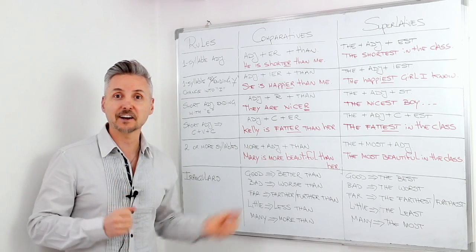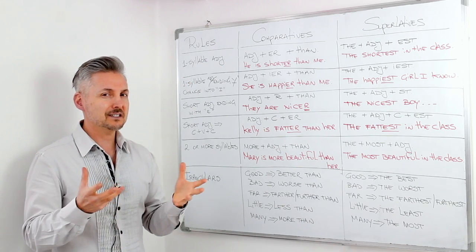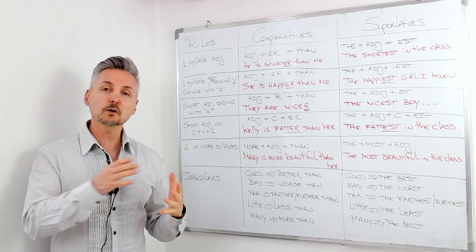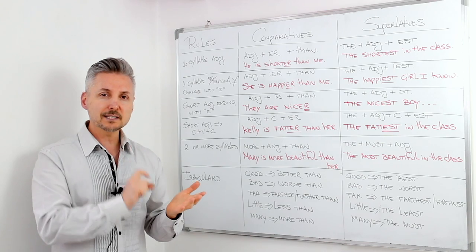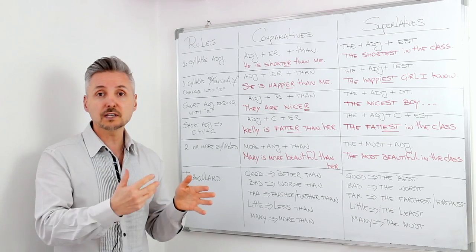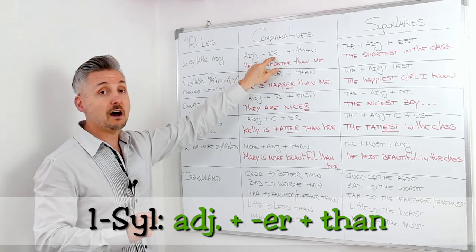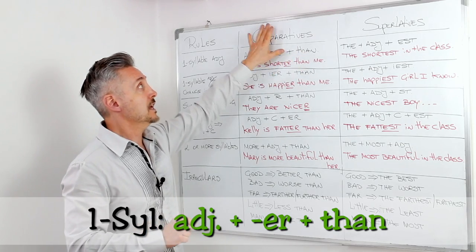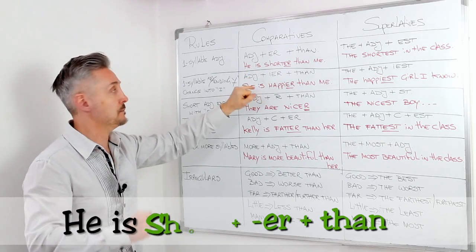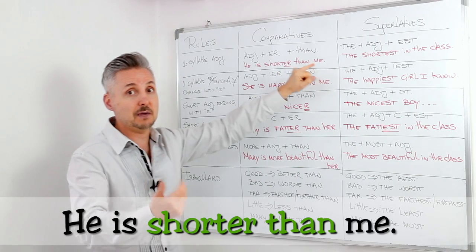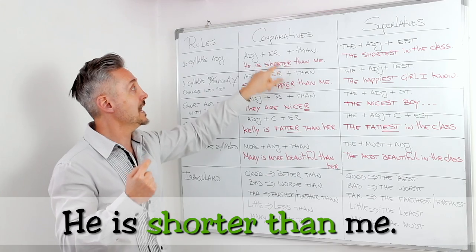We're back with the diagram. So, let's look at the first rule. One-syllable adjectives. And you ask yourself, one syllable? Yes, you can check the syllables in English on your dictionary. There, you can see if it has one syllable, two syllables, or more. One-syllable adjectives take adjective plus er plus than in the comparative, if you want to compare a noun with another noun. For example, he is shorter than me. So, short is one syllable. And I added er.